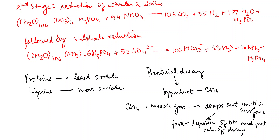Proteins are made up of amino acids and peptides, so when proteins degrade they give rise to amino acids and peptides. Similarly, lipids and waxes degrade into glycerol, and fats degrade into fatty acids. All these long chain compounds degrade to smaller compounds.